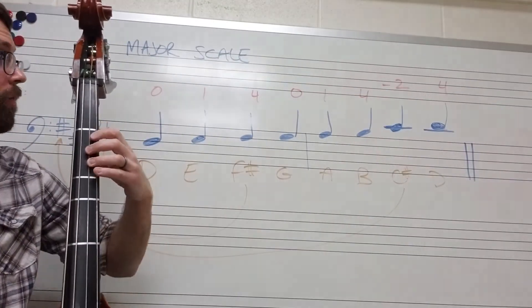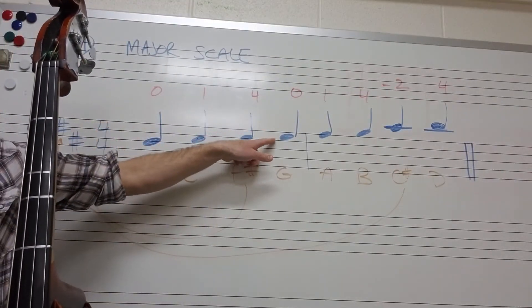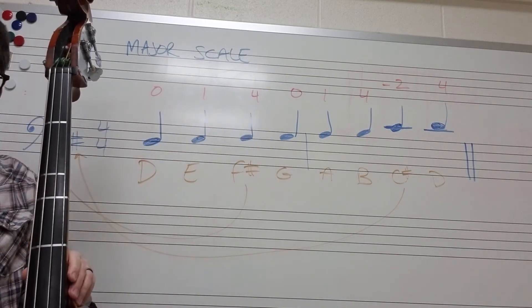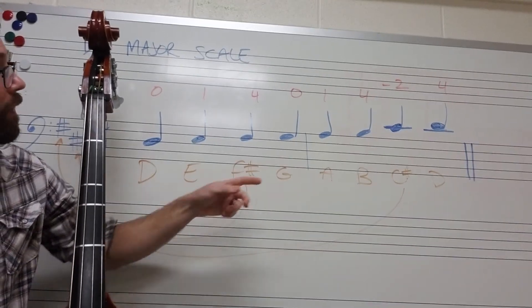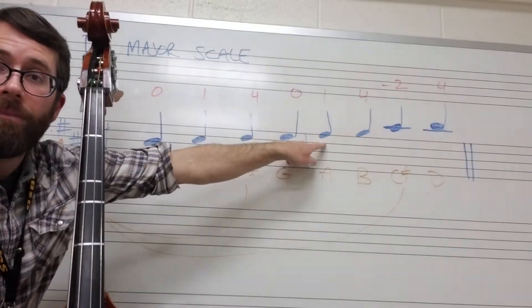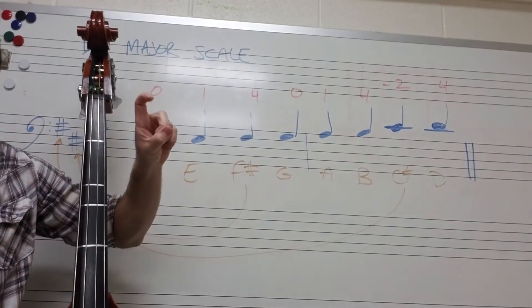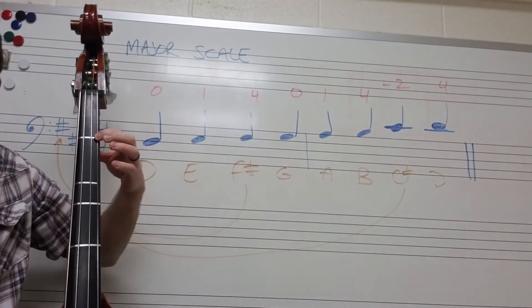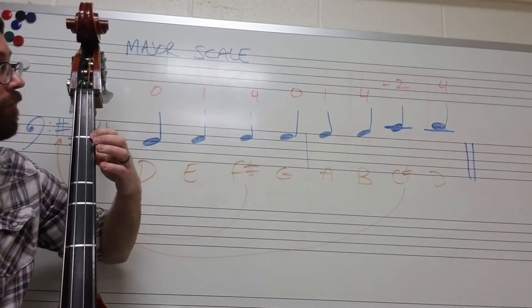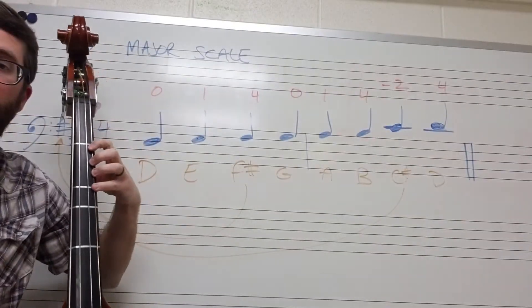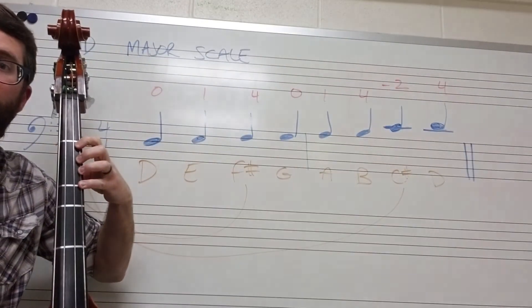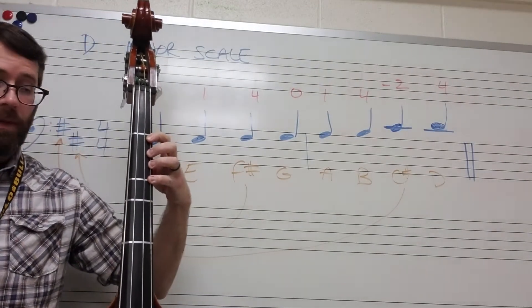Okay, now the next note right here, that's our open G. So again, I use the zero finger number. There it is. The next note is an A. And so I'm going to play that A with the first finger again, just like I did with the E. The next note is B. Okay, now this is where the shift happens.